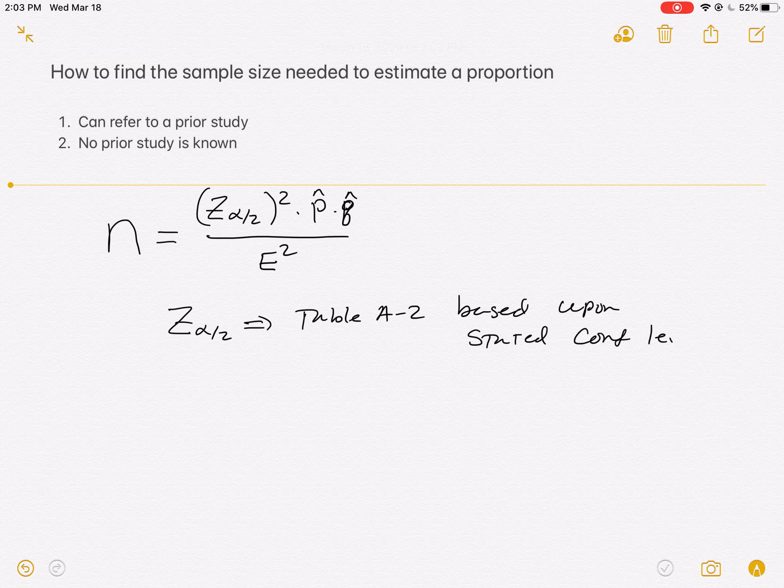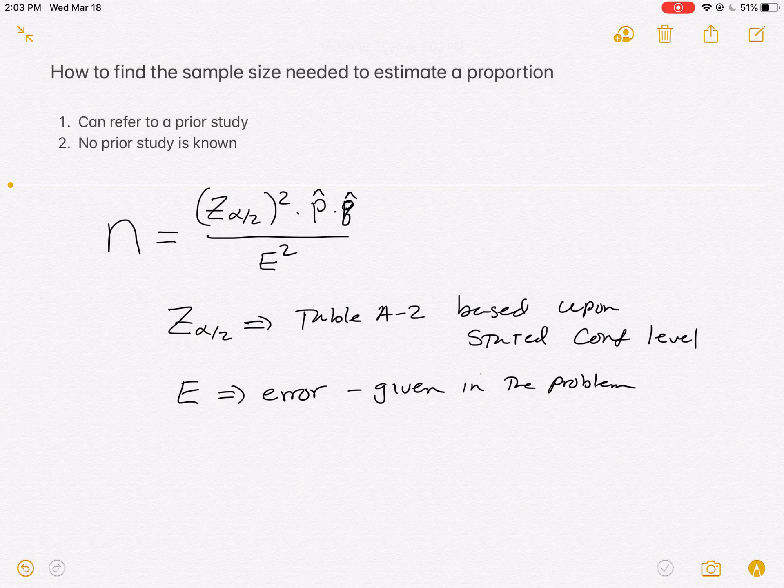That will be in the problem. If you're ever in a situation where there's not a stated confidence interval or level, they will use 95%, since that's standard. E does stand for the error. And that will be given in the problem. They'll tell you how close they want to be. So we know those two.